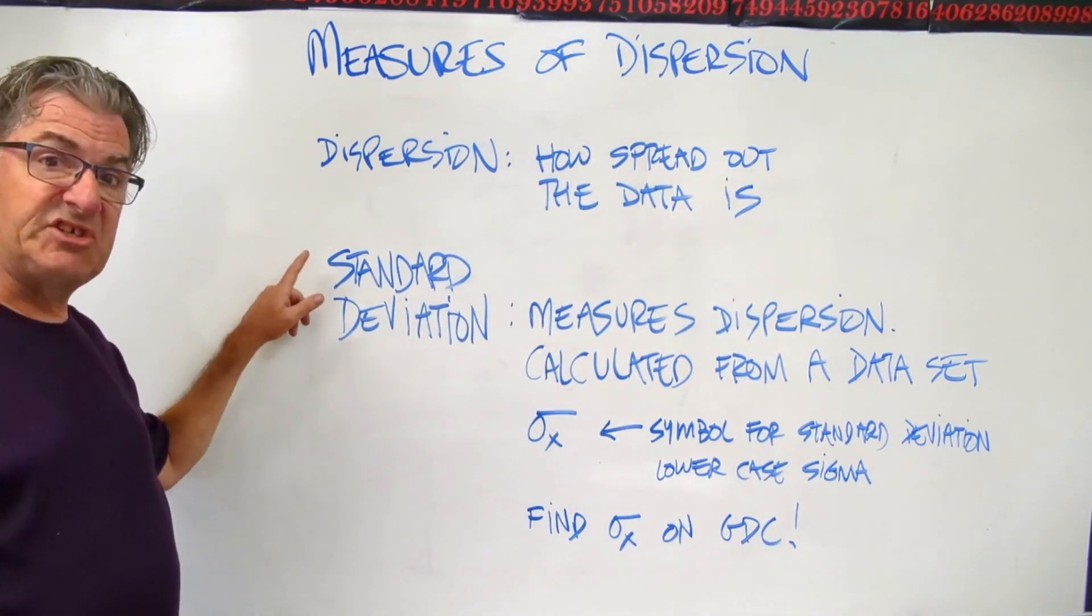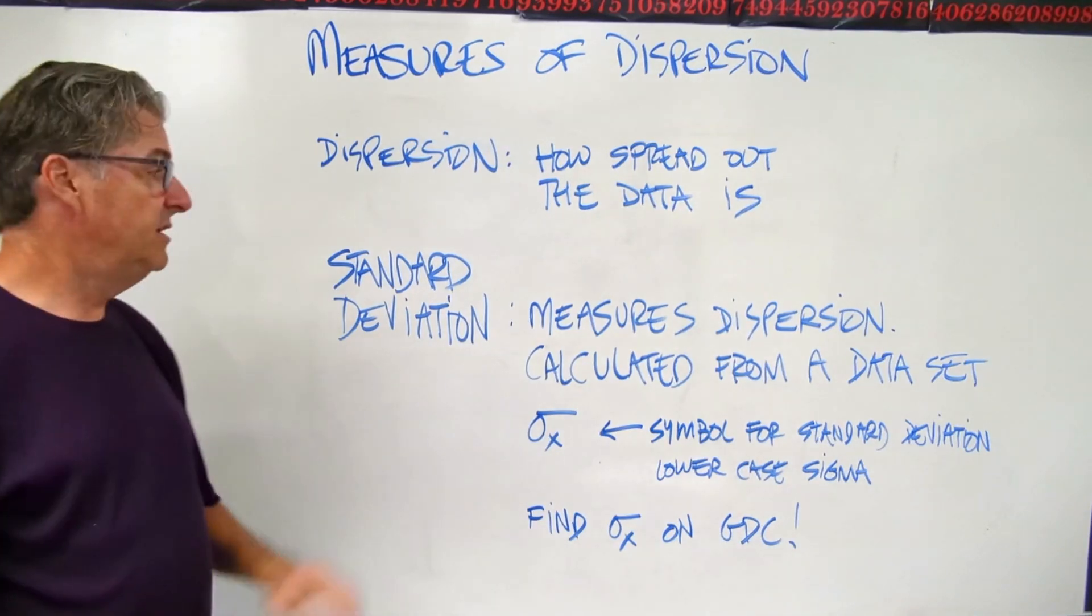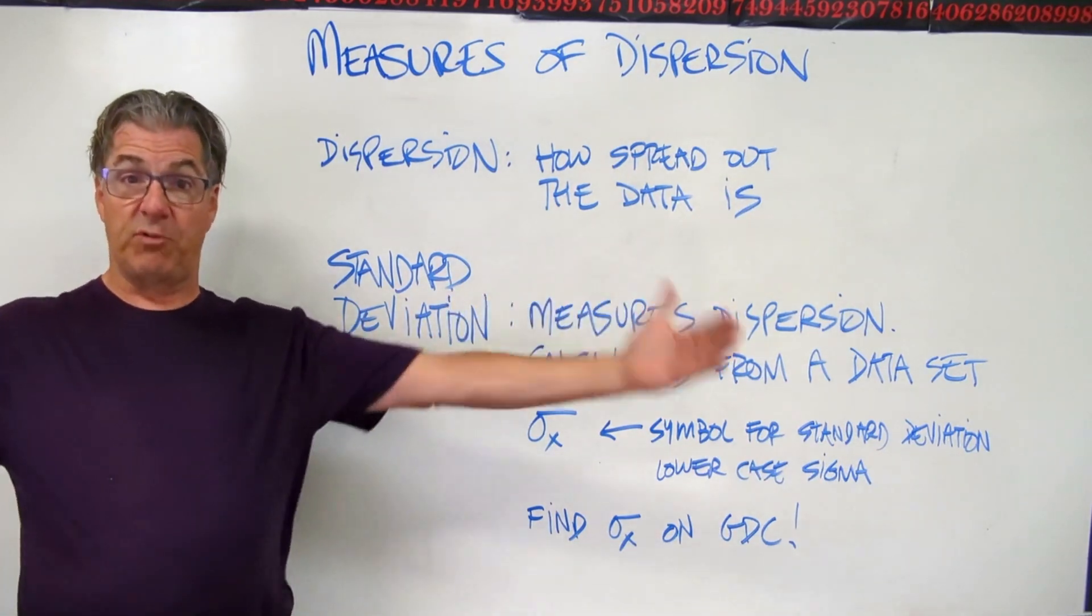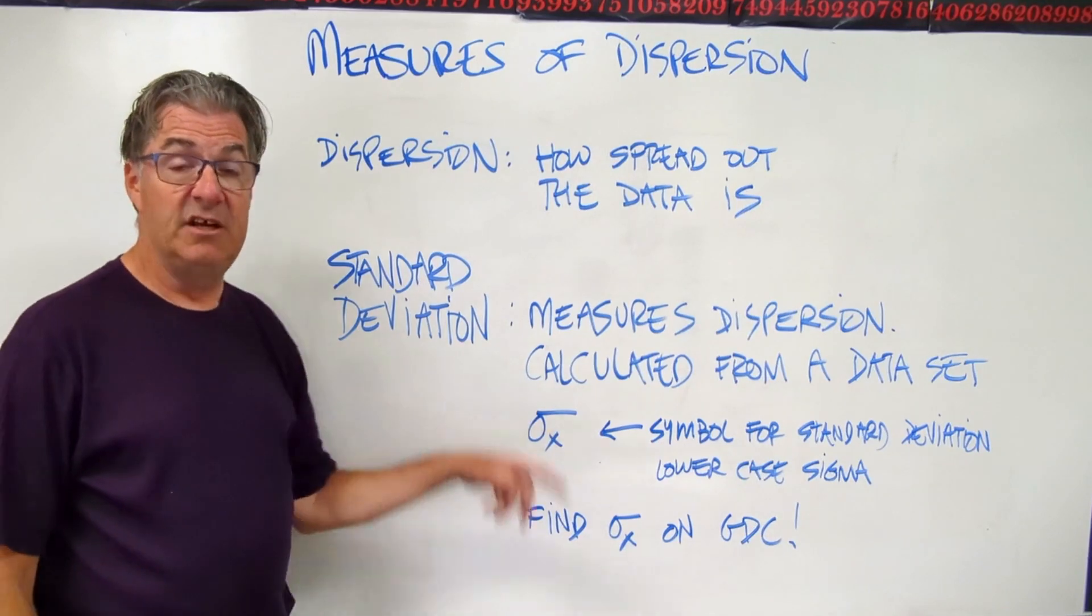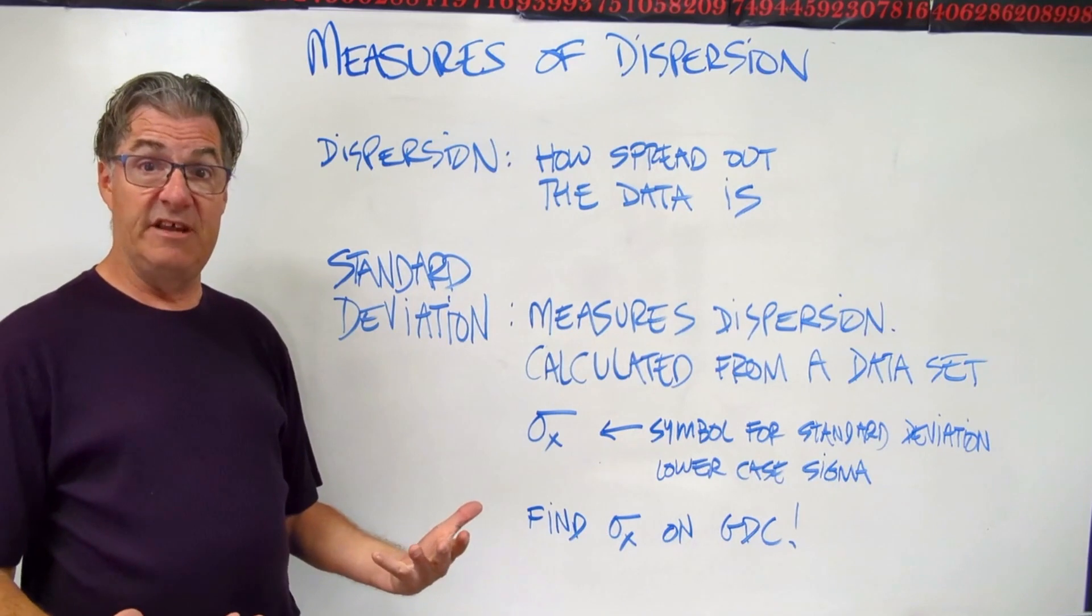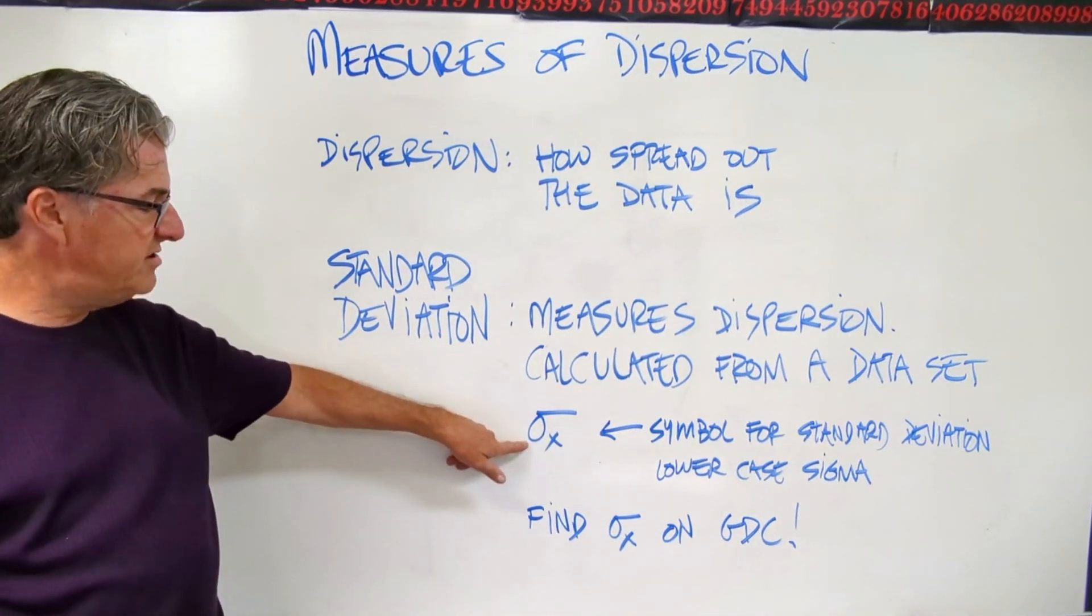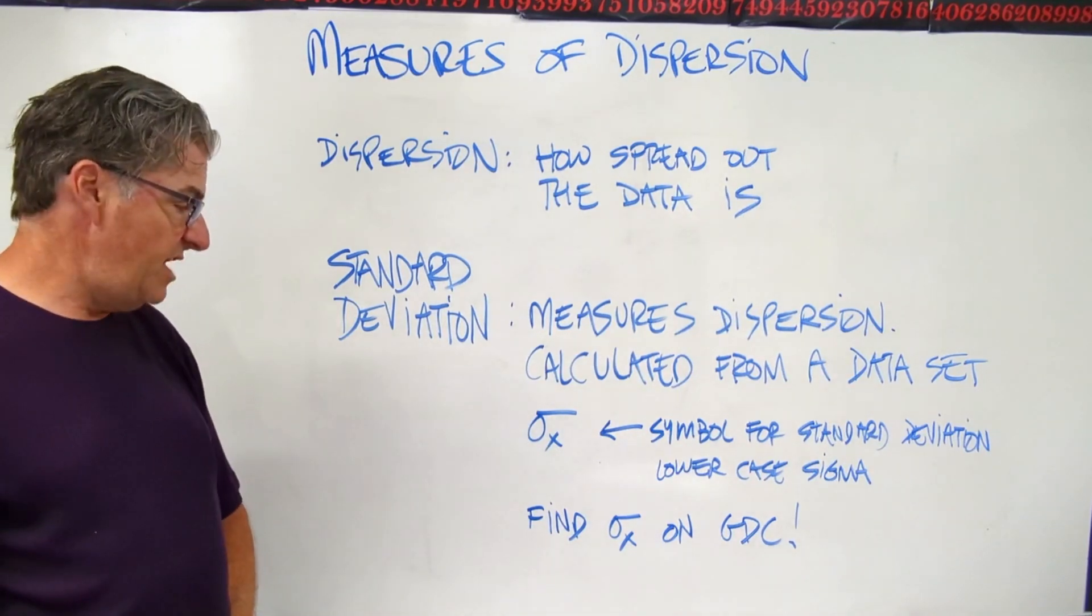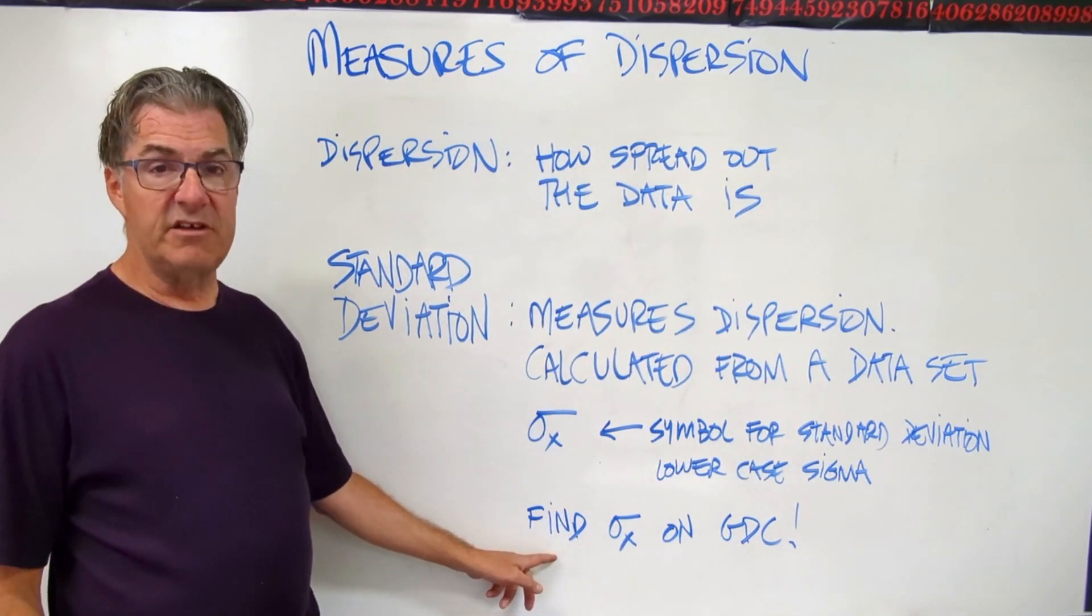So dispersion is how spread out the data is, and we use standard deviation. That's what this lesson is going to be about. Standard deviation measures dispersion. The higher the number, the more spread out the data is. It's calculated from a data set. We use the sigma x, this is a lowercase sigma. That's the symbol for standard deviation. And finally, you can find it using your graphing display calculator.